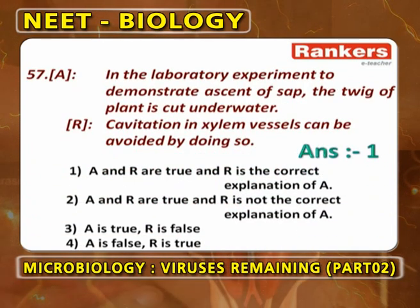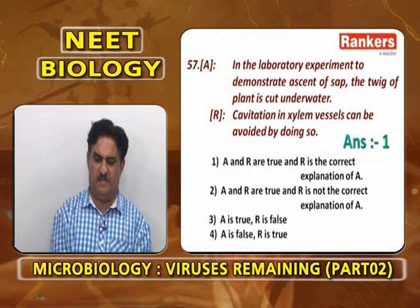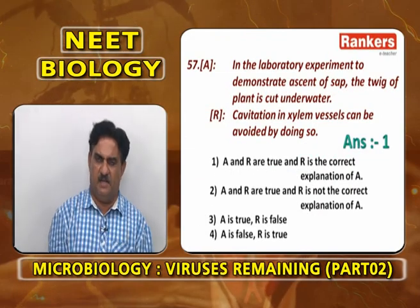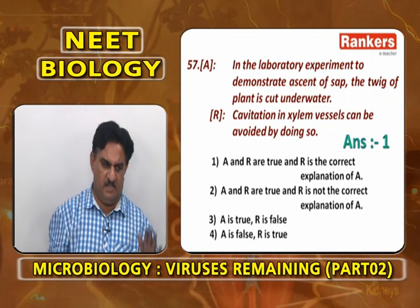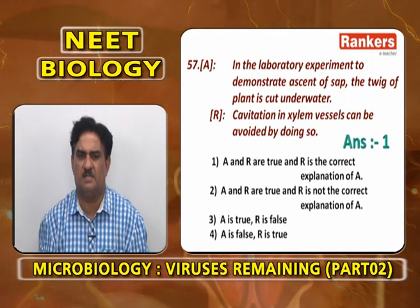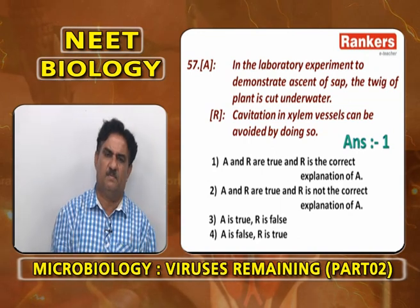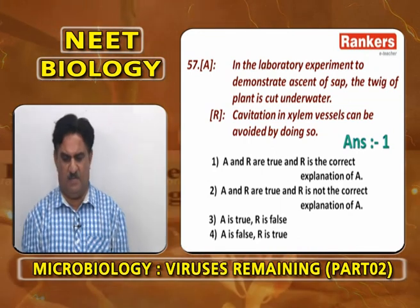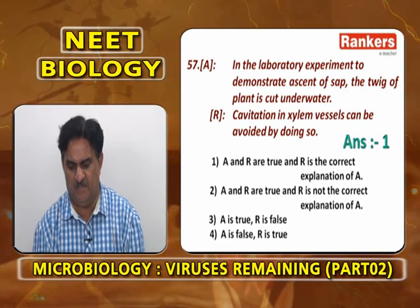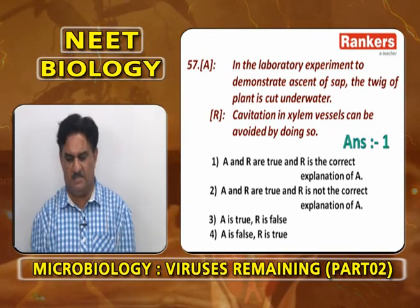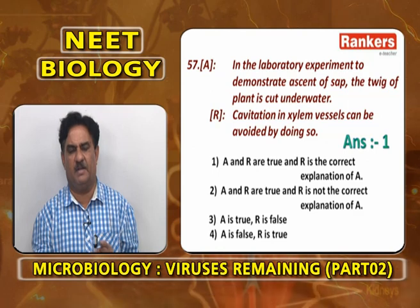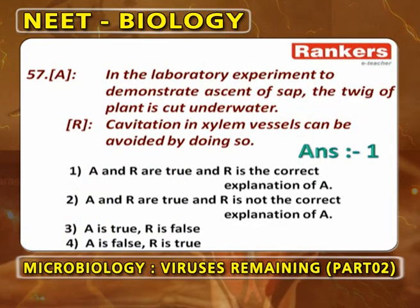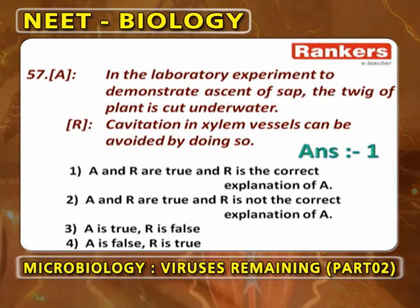Assertion-reasoning: In laboratory experiments to demonstrate ascent of sap, the twig of a plant is cut under water. This is done because cavitation in xylem vessels can be avoided by doing so. When cut in external environment, there is a chance of bubble formation, embolism occurs, and water movement may stop. Cutting under water minimizes cavitation. So A and R are correct; R is the correct explanation of A. First option.